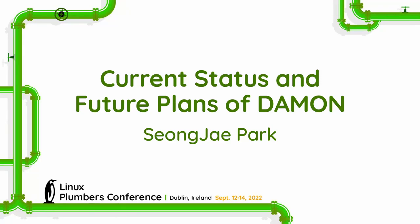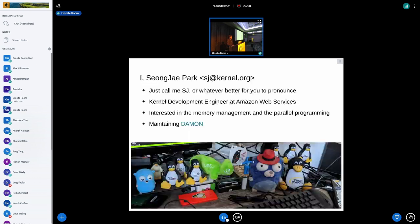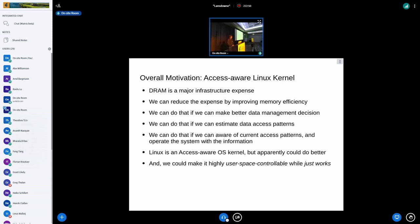Thank you for the introduction. First of all, the disclaimer: all opinions are my own, not my employer's. My real name is Sung Jae, and you can call me SJ or whatever is easier to pronounce. I'm currently working as a kernel development engineer at Amazon Web Services, with interest in memory management and power programming, and I'm co-maintaining upstream.